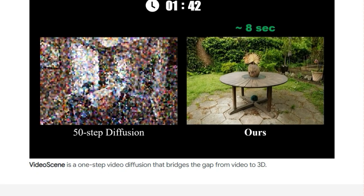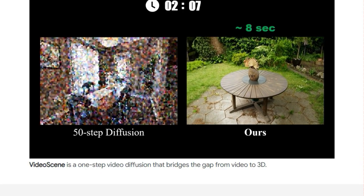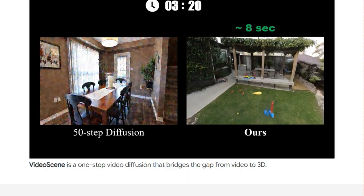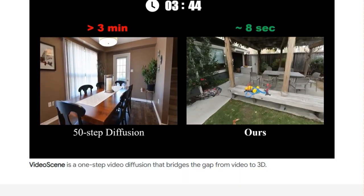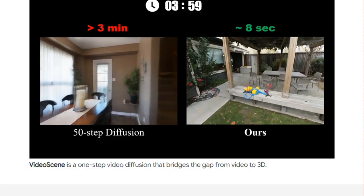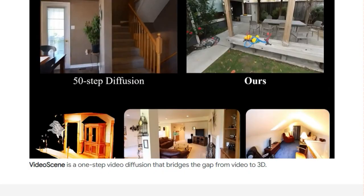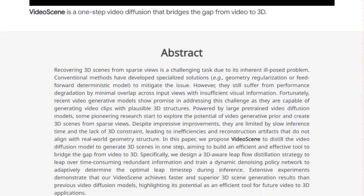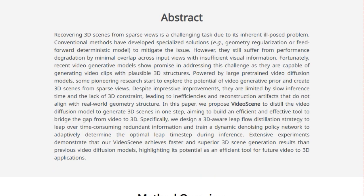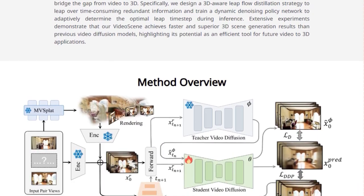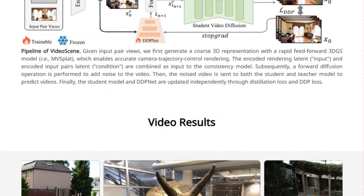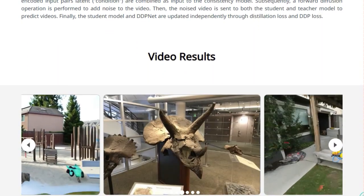Video Scene tackles this by distilling a powerful video diffusion model, making it much faster and more streamlined for 3D generation. The core of their approach lies in a clever technique called 3D-Aware Leap Flow Distillation — think of it as intelligently skipping over unnecessary steps in the diffusion process, significantly speeding up generation. To decide which steps to skip, they've developed a dynamic denoising policy network that adaptively figures out the best time to leap during the inference process. Furthermore, Video Scene leverages a rapid feed-forward 3D model called MVSPLAT to get a quick initial 3D understanding with accurate camera control.